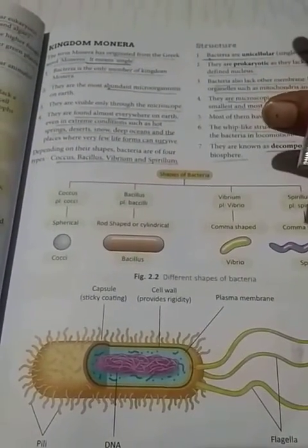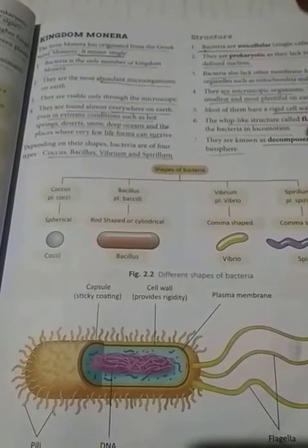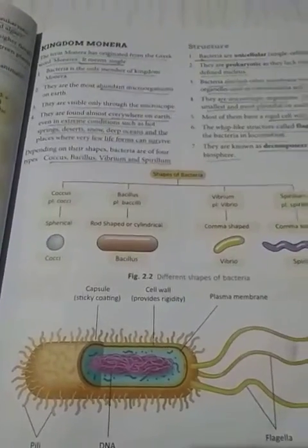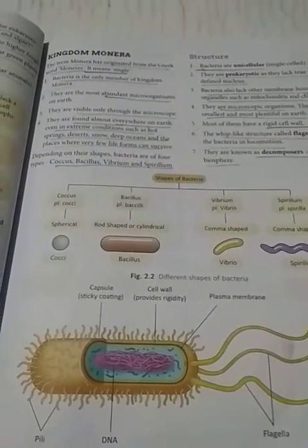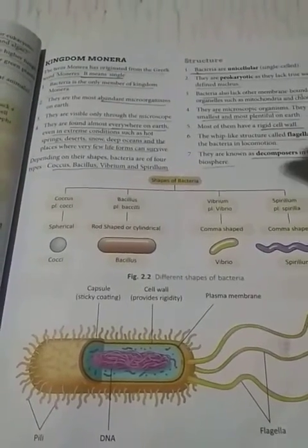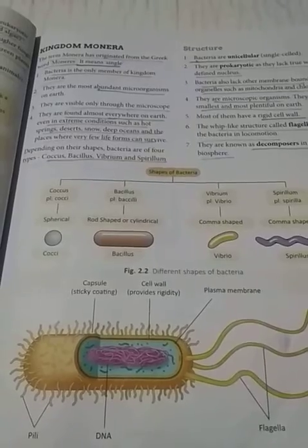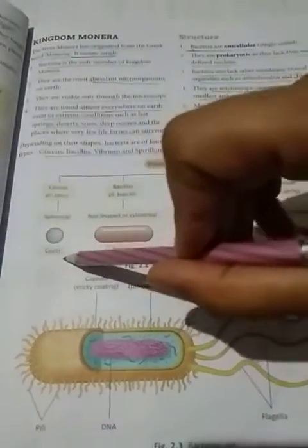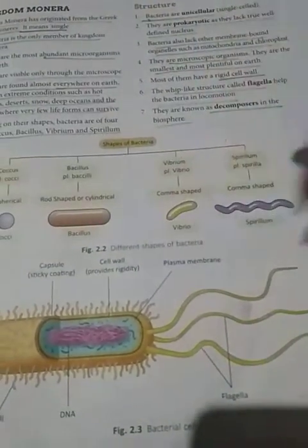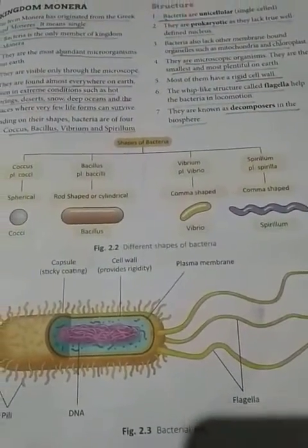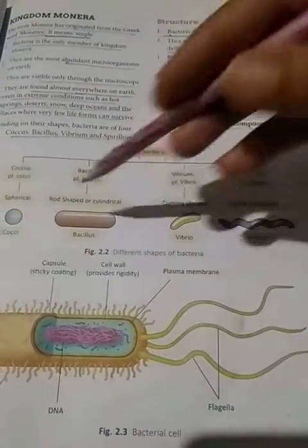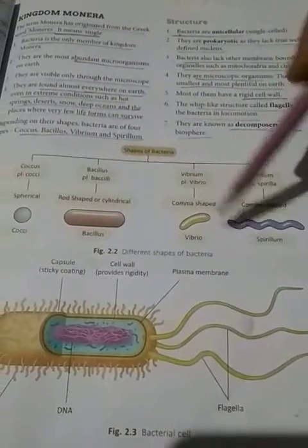Bacteria can be found in colder places, hotter places, in oceans, rivers, and lakes - they are omnipresent, found everywhere. According to their shapes, bacteria are classified into four types: Cocci - the circular-shaped ones; Bacillus - rod-shaped; Vibrio - comma-shaped; and Spirillum. Bacteria are divided into these four categories depending upon their shapes.